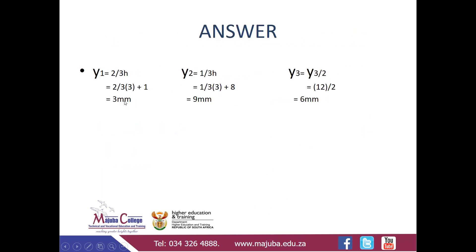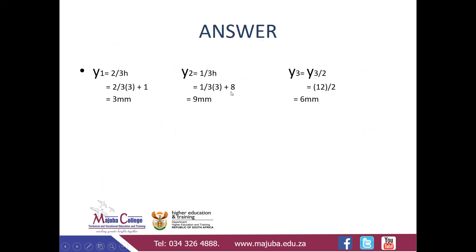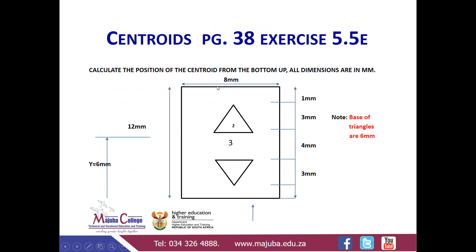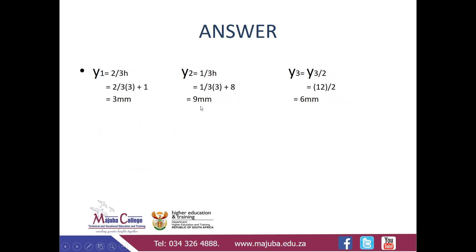For y2, the formula changes because the triangle is facing upward. The formula is now 1 over 3 times height. The height is 3, plus the whole distance below it, which is 4 plus 3 plus 1, equaling 8. So y2 equals 1 over 3 times 3, plus 8, giving a total of 9 millimeters.